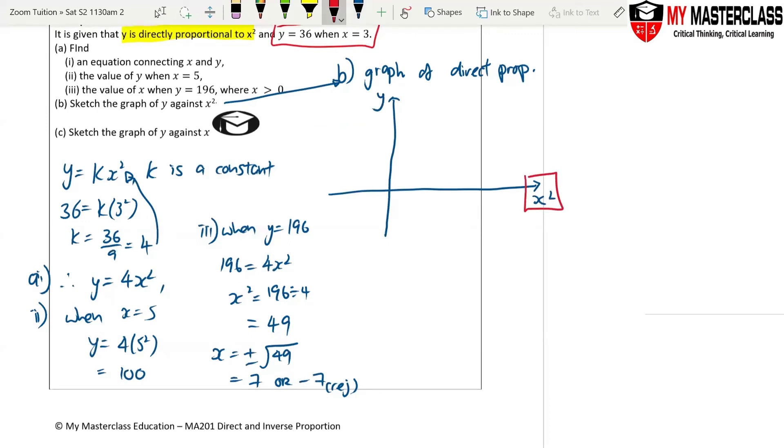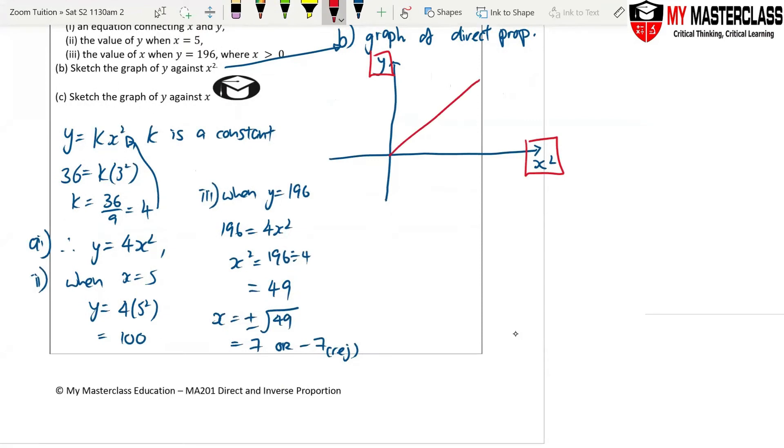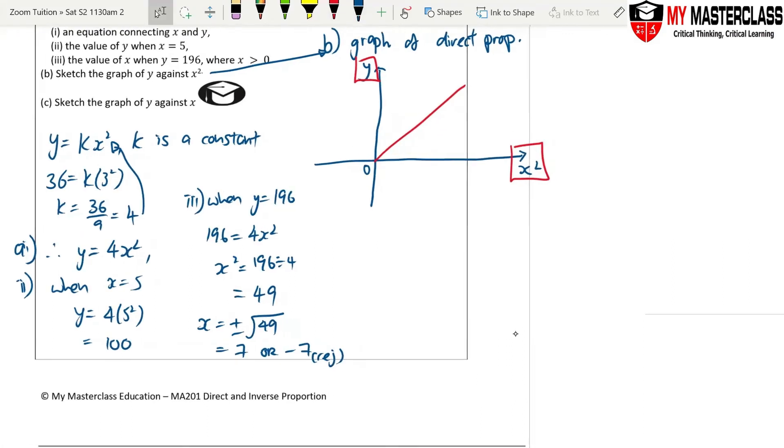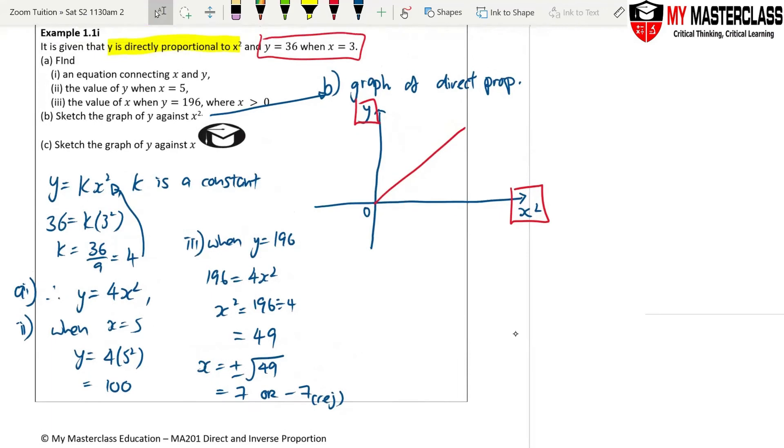Because you see y is directly proportional to x square, this guy is not your usual x. This guy is x square. This guy is y. Because y is directly proportional to x square, then the graph will look like a straight line. It's a straight line. So this is the direct proportional graph. That means if y is directly proportional to x square, you look at your x-axis. It must be x square. It must be the variable that y is directly proportional to.